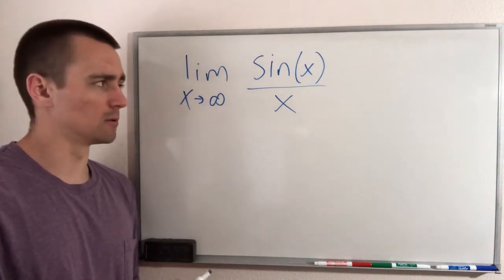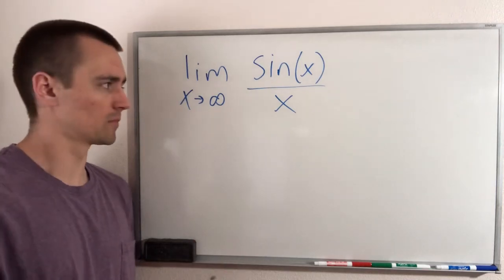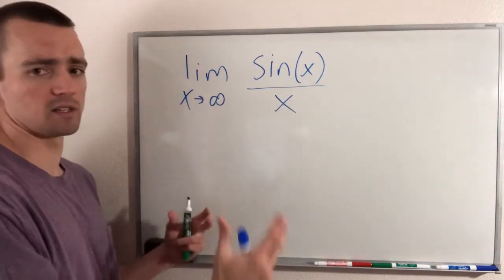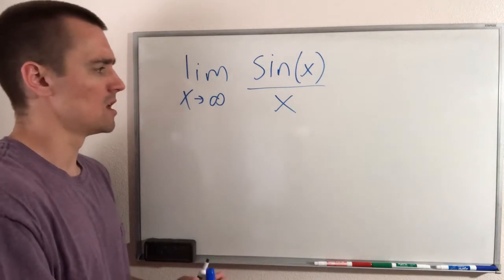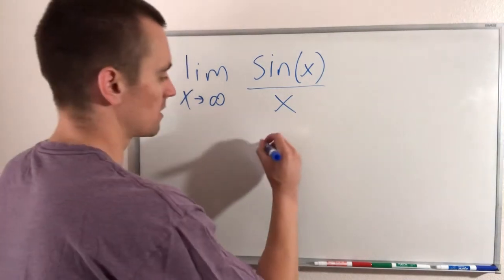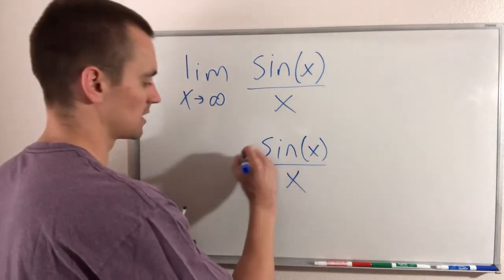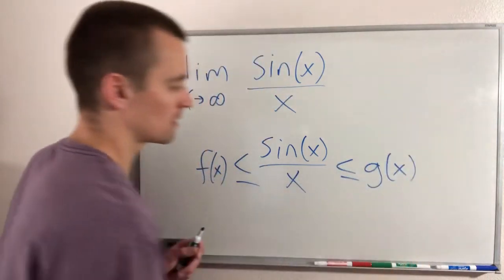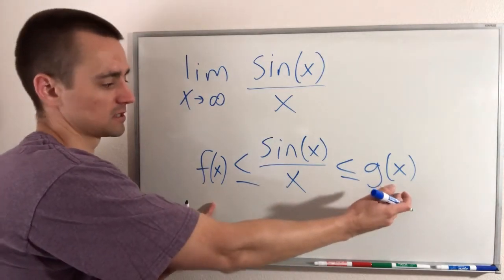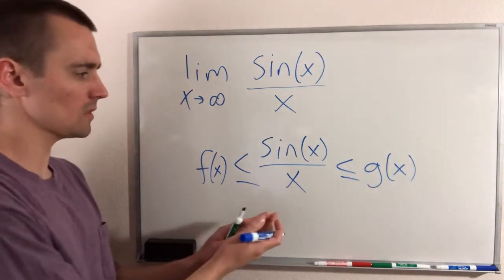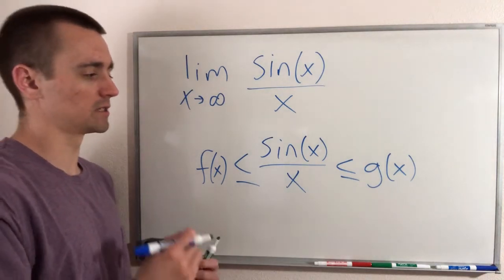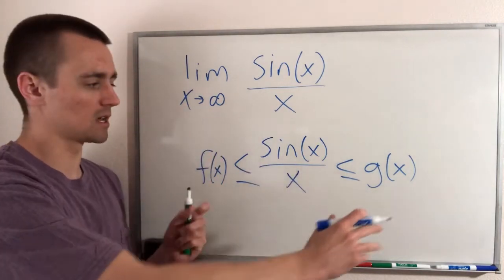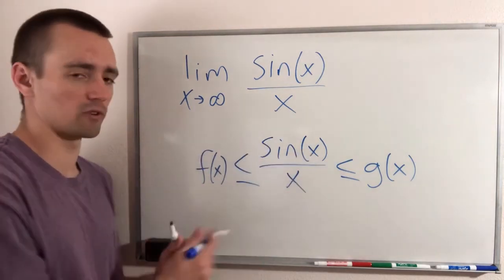So what other tool might we be able to use? We're going to use the squeeze theorem. What the squeeze theorem says is if we can find two other functions where sine of x over x is trapped in between them, then we can use the limit of those functions to find the limit of this function. So we want to think about what two functions might trap sine of x over x between them as x gets infinitely big.